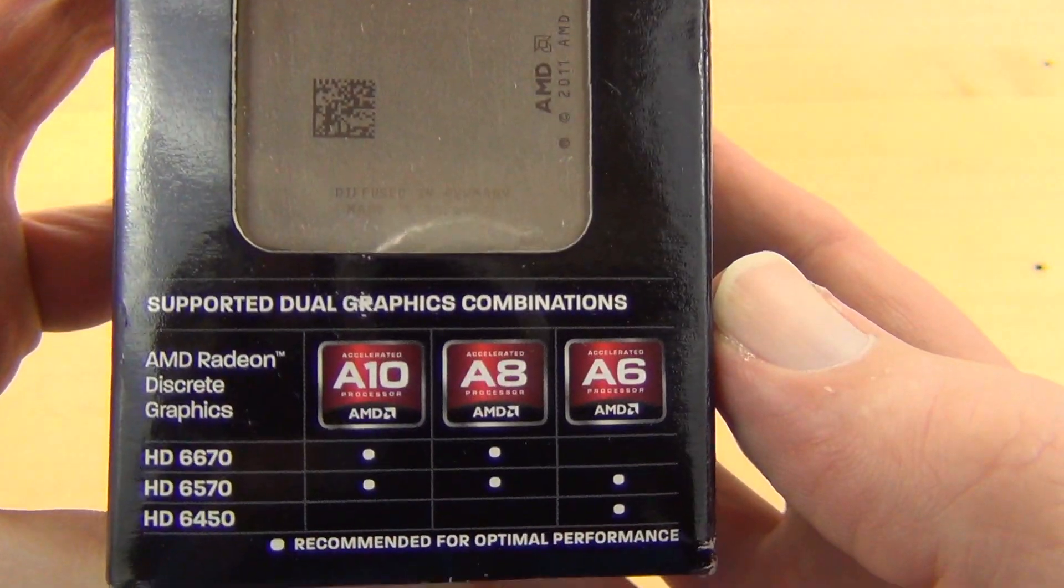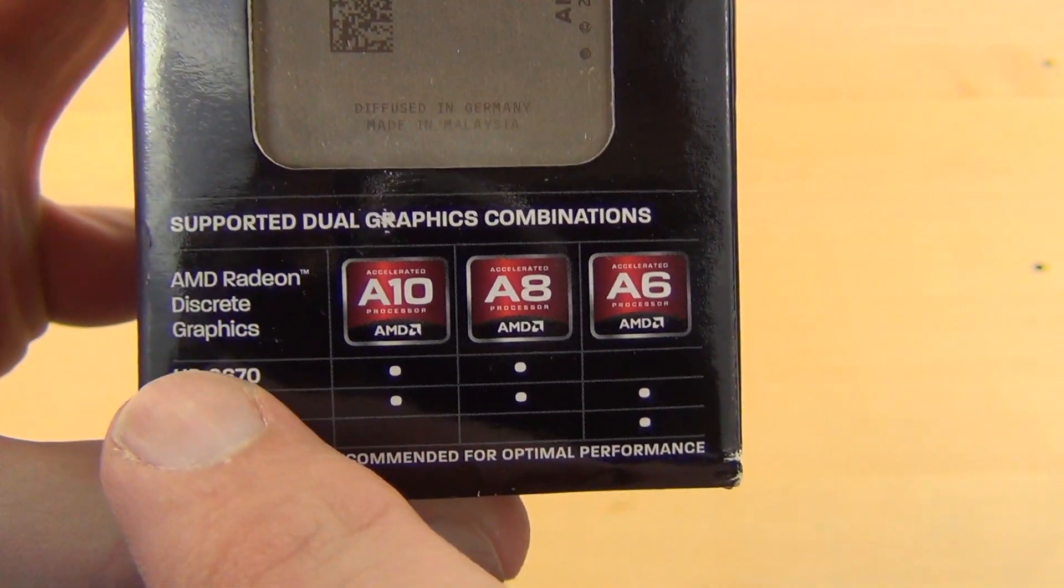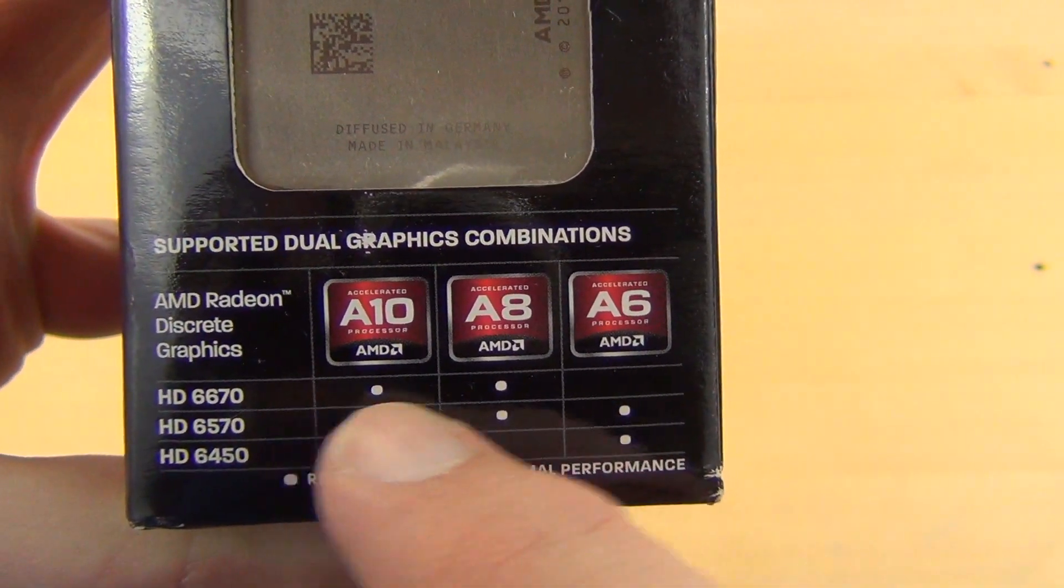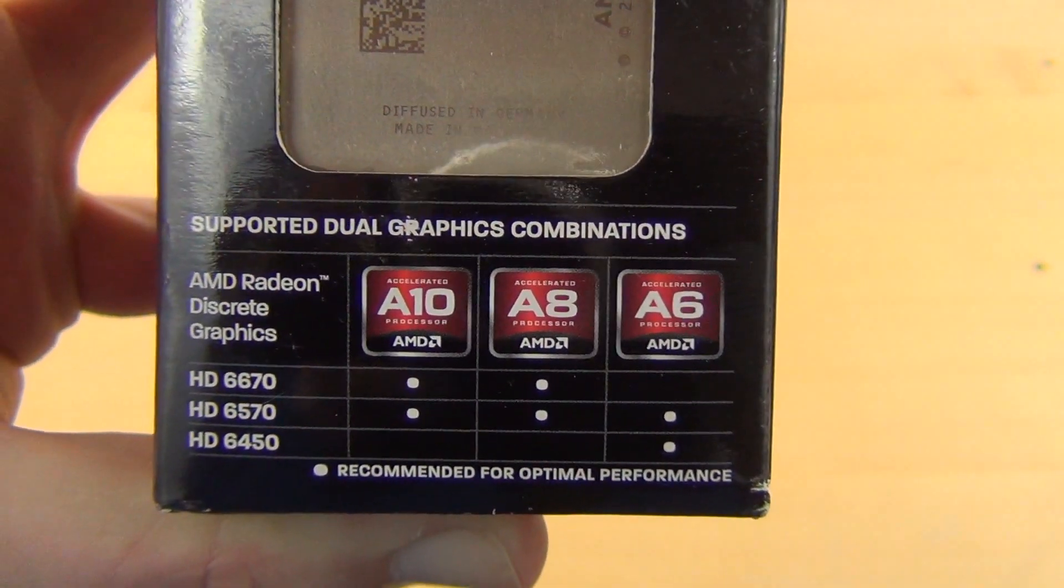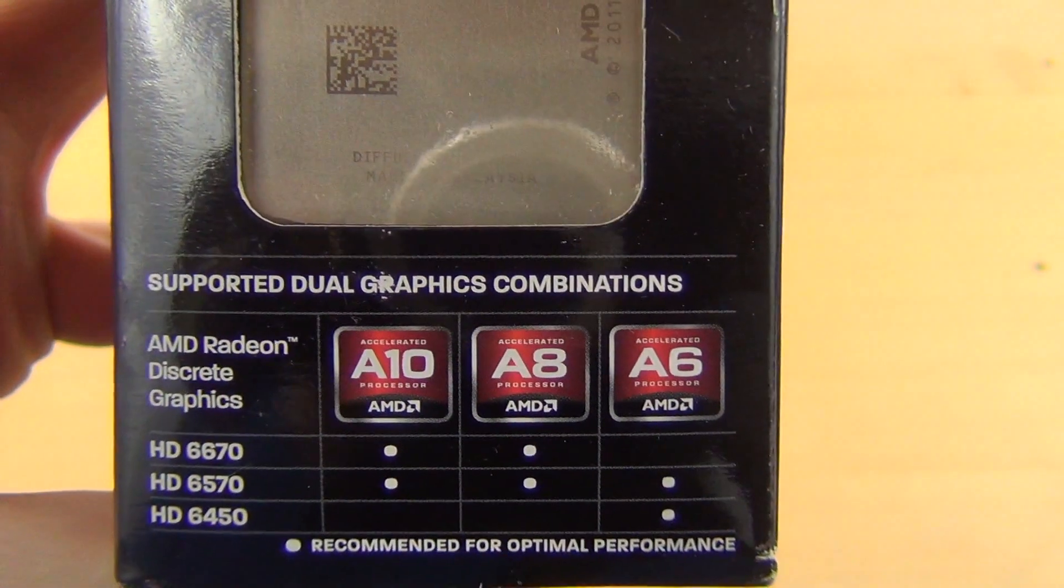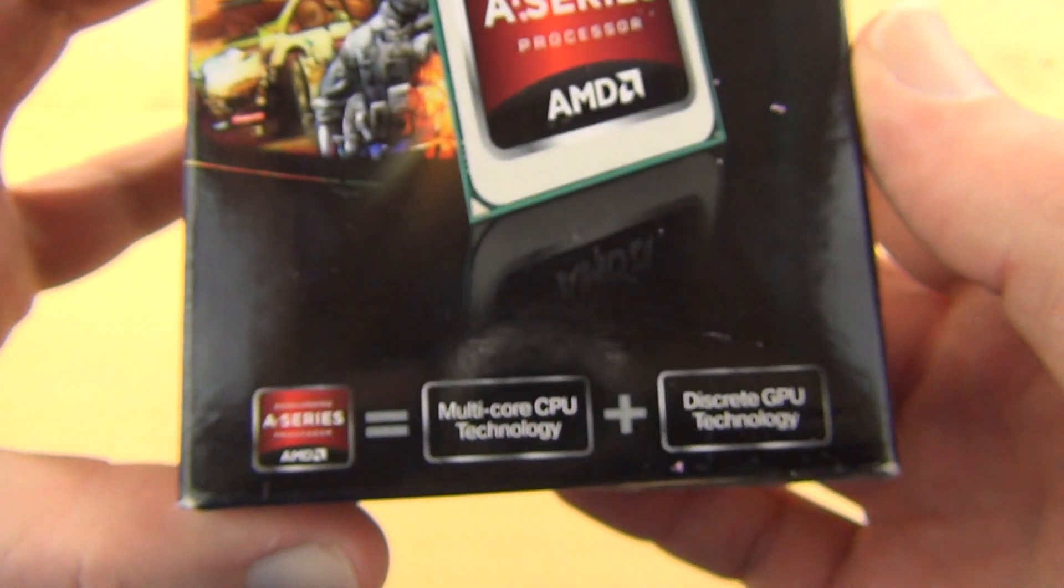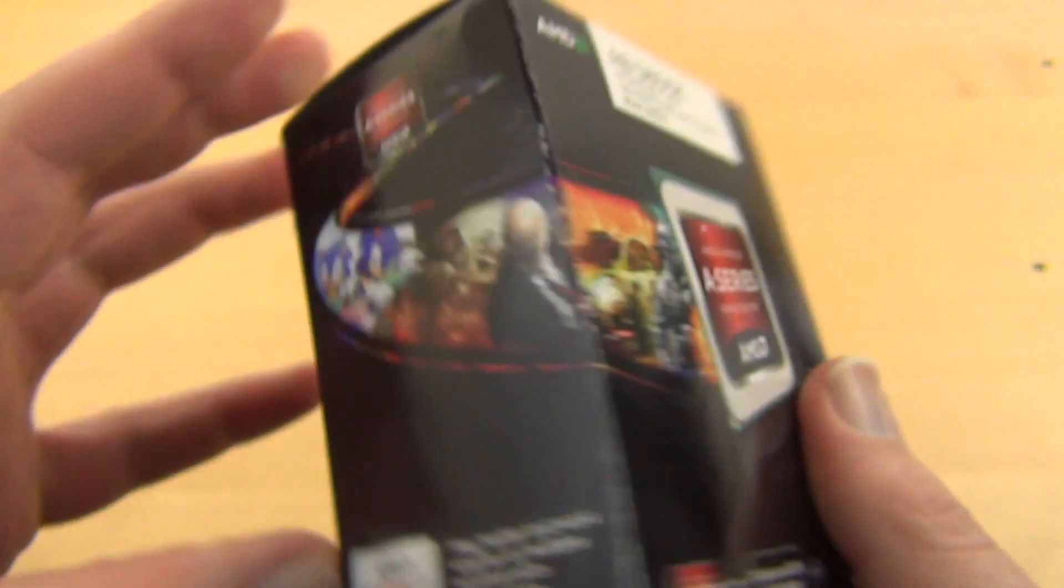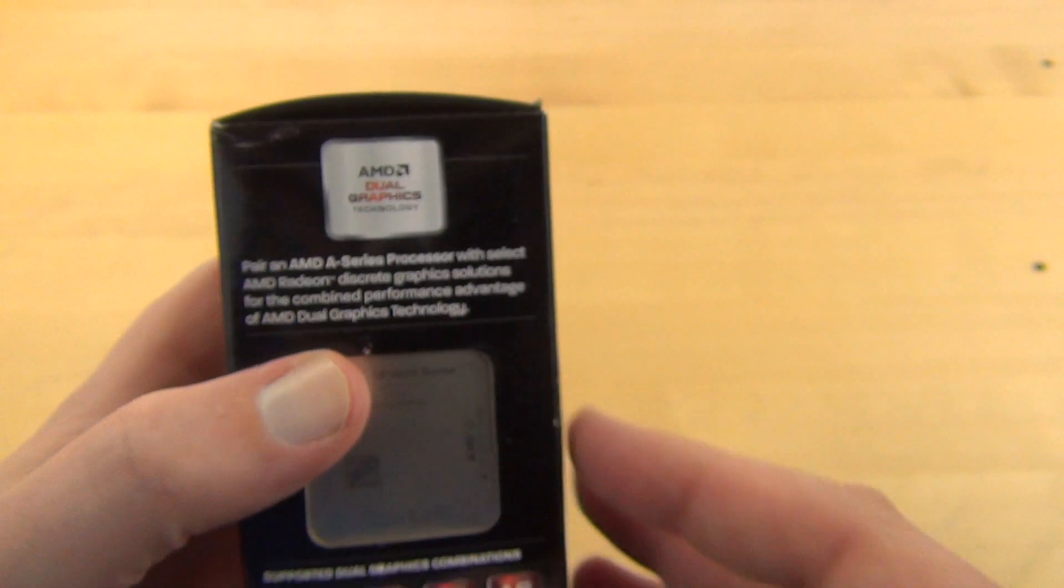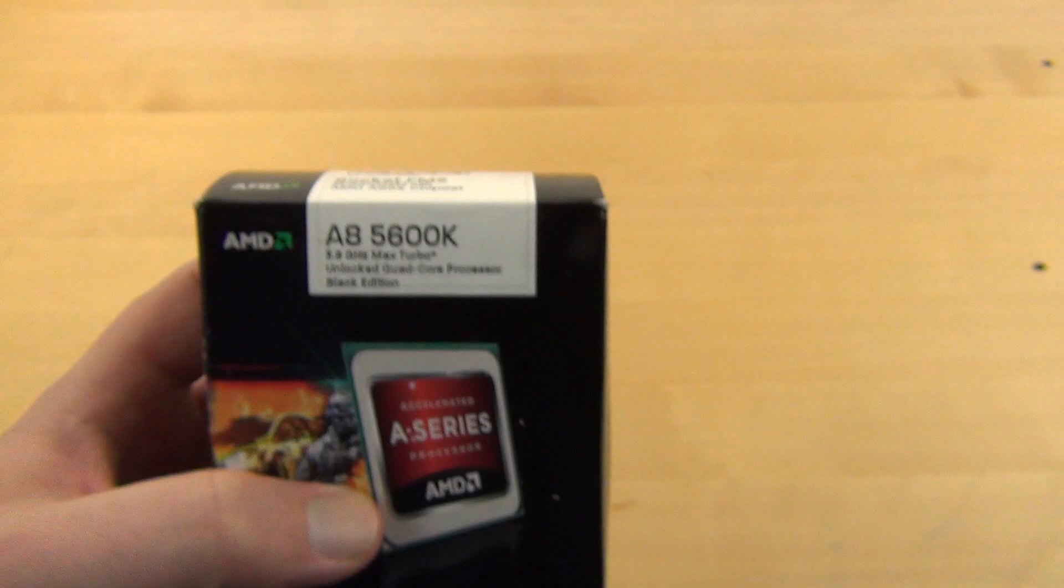And there's your chip. So this is actually going to go into a build where the person already has the 6670, so we're going to use their 6670 plus this chip in the optimal crossfire-ish dual graphics performance. So we'll do some benchmarks on some games. There's also a deal right now where these are coming with SimCity. So we will be putting the new SimCity on here and seeing just how it does.